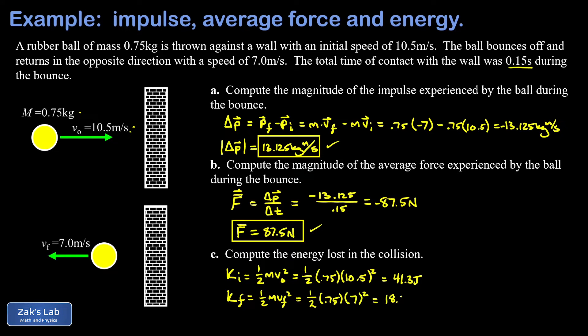So how much was lost? It's just 41.3 the initial value minus 18.4 the final value, and when we run the numbers on this we get 22.9 joules lost and we're done with part c.